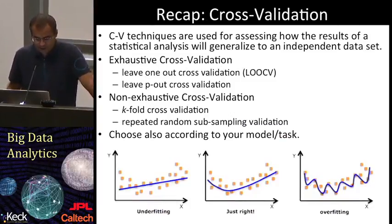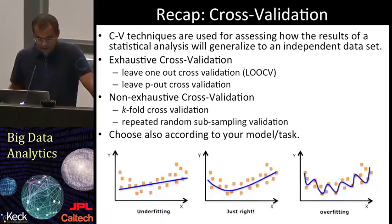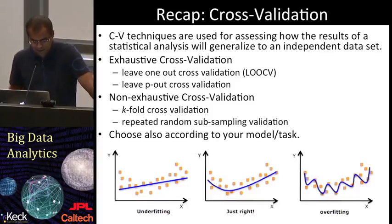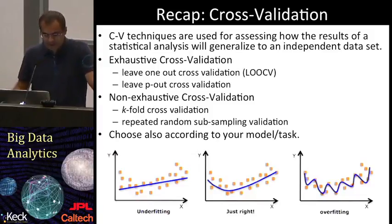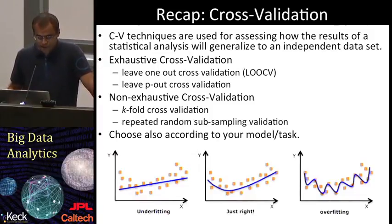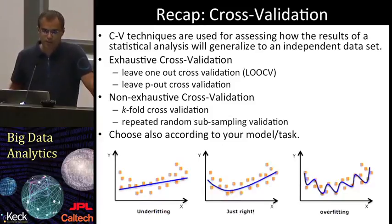As a quick recap, overfitting occurs when a model is not able to generalize and starts to memorize the training data rather than learning the general trend, like in the figure on the right. Basically, in an overfitting situation, we have a relatively small error on the training set but a much larger error when new data is presented to the network.